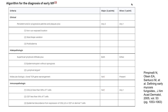Immunopathological criteria include loss of mature T-cell markers such as CD2, CD3, and CD5 below the 50 percent threshold, as well as loss of CD7 in less than 10 percent of T-cells. Another criterion is epidermal discordance from expression of CD2, CD3, CD5, or CD7 on dermal T-cells.